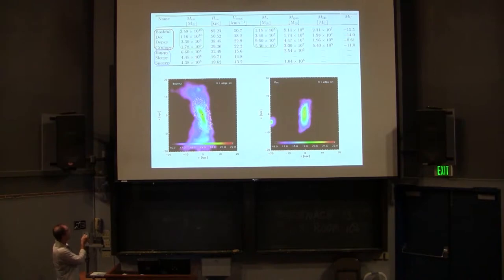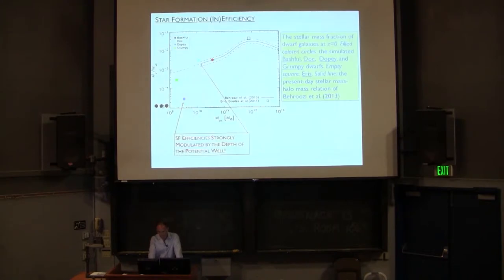So we have seven dwarfs. Their masses range between 4 times 10 to the 10 down to 4 times 10 to the 8 with radii between 85 and 20. This is always z equals zero. Circular velocities between 13 and 50 kilometers per second. They have stellar masses between few times 10 to the 5 and 10 to the 8, plenty of H1, as we're going to see in a moment, and luminosities range between minus 8.6 and minus 15.5 or so. Remember only the top four of these systems, in fact, are able to form stars. And I'm going to go back to that issue in a moment. That was for your amusement.